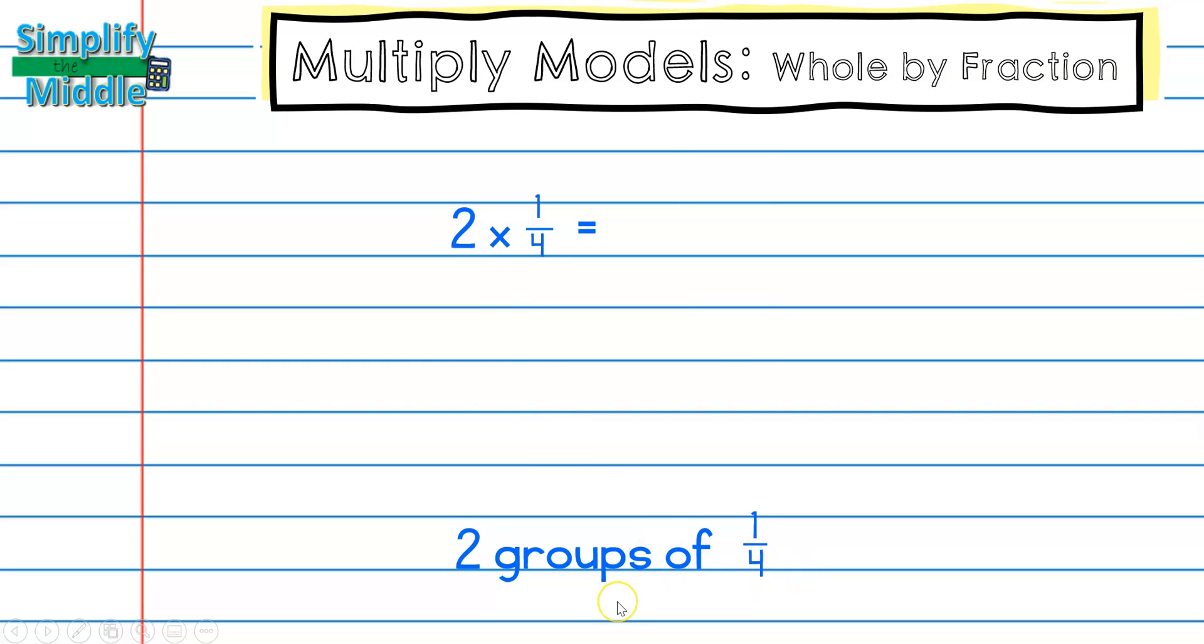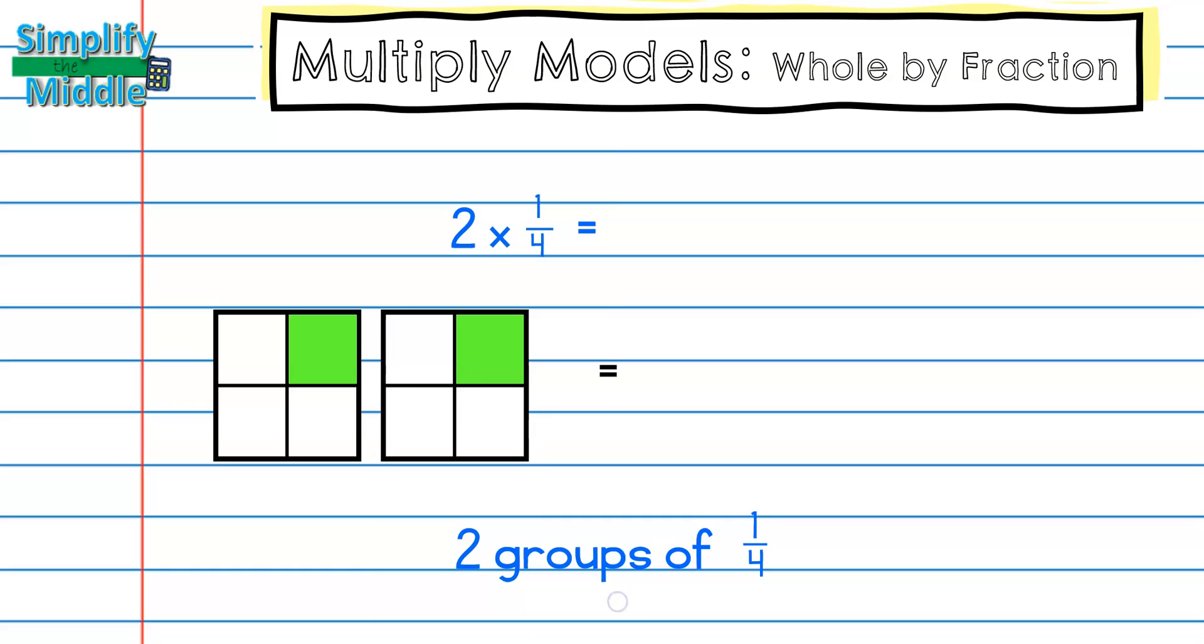We have 2 groups of 1/4, that makes this problem really simple. So we know we're going to draw 1/4, and since we have 2 groups of that, we'll just repeat it one more time. Sometimes it helps to put your answer into another fraction frame, so in this fraction frame I have 4 pieces.